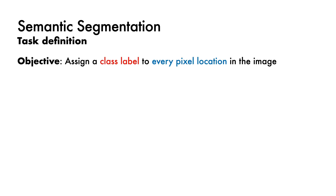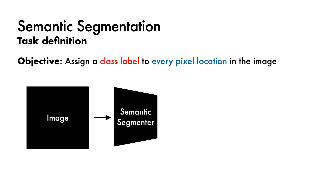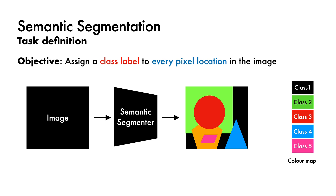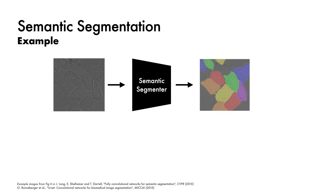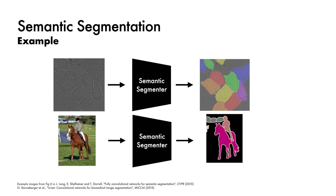The fourth task is called semantic segmentation. The objective is to assign a class label to every pixel location in the image. Starting from an image, a semantic segmenter produces an output the same size as the input, giving a class label at every pixel. The name comes from the fact that you are effectively segmenting the image into regions and giving each region a class label. One use case is to segment medical images for further analysis; another is for more general image understanding, such as segmenting a horse and rider into separate regions.